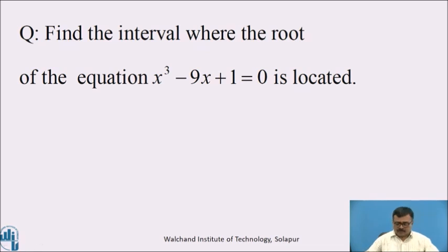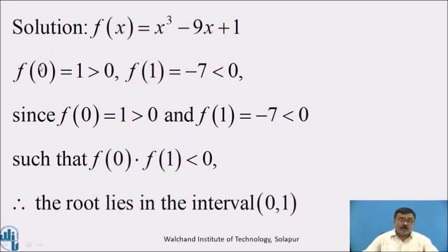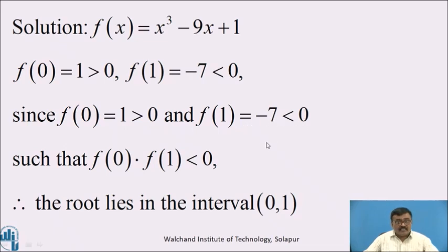I hope all of you found the answer. Solution: Let f(x) = x³ − 9x + 1. To find the interval, substitute x = 0, 1, 2, 3, and so on, where the sign of f(x) changes either from positive to negative or from negative to positive. The corresponding values of x are considered as the interval. f(0) = 1, which is greater than 0, and f(1) = −7, which is less than 0. Since f(0) > 0 and f(1) < 0, we have f(0) × f(1) < 0. Therefore, the root lies in the interval [0, 1].